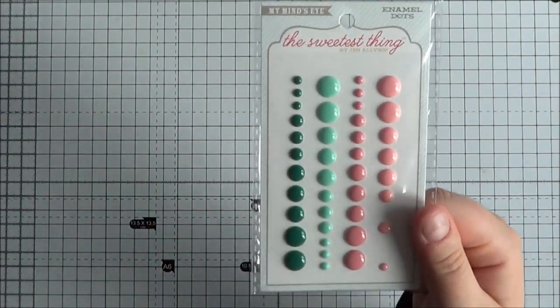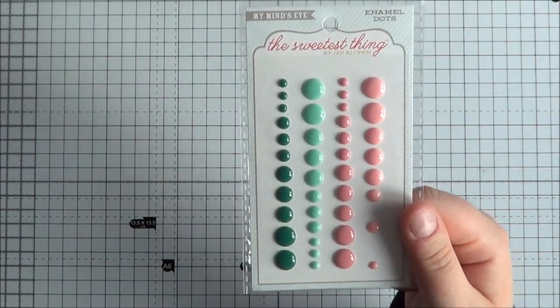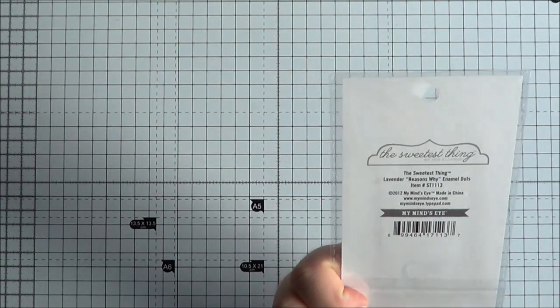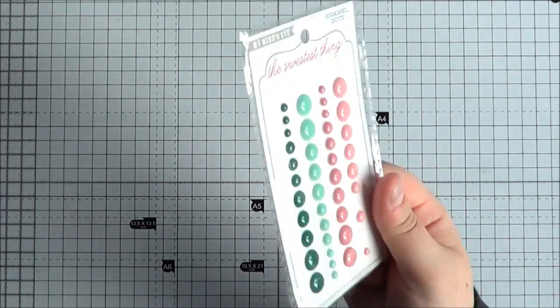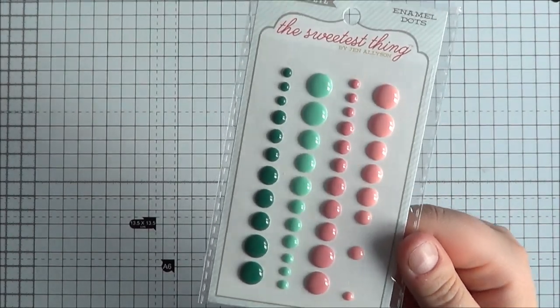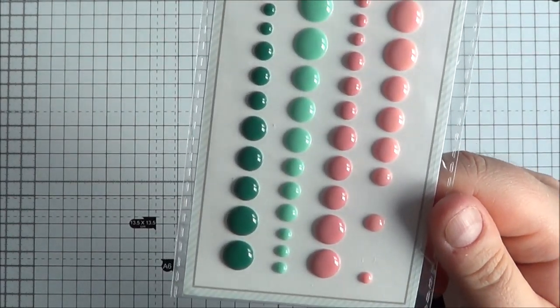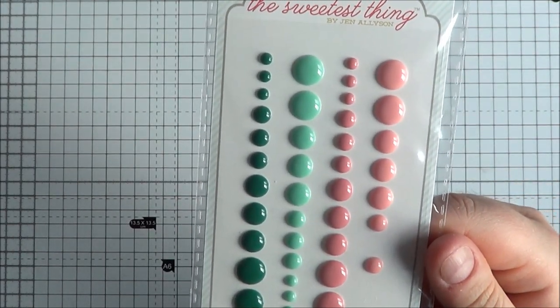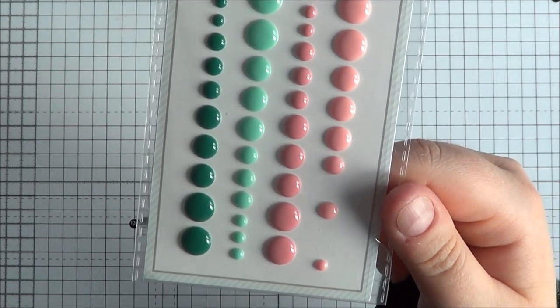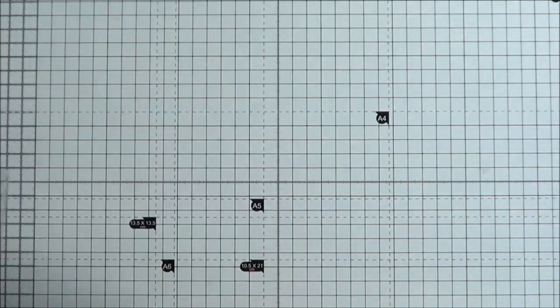And then I also got some of the My Mind's Eye enamel dots. These are the Sweetest Thing Lavender Reasons Why. There's two shades of sort of an aqua and like a darker green and then two shades of pink as well. So they're really pretty.